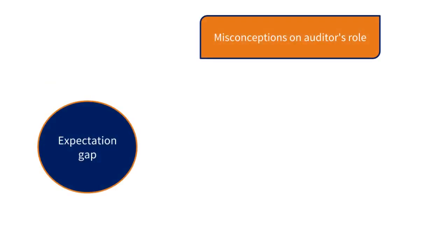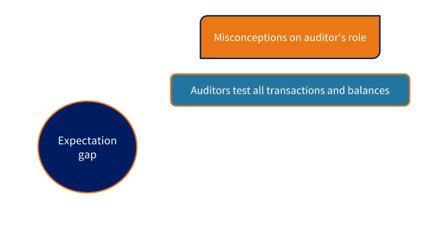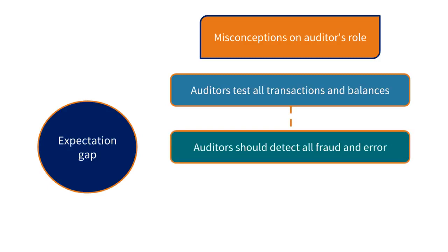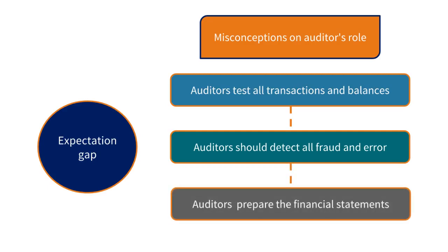There is a misconception of the role of an external auditor. Many users of the financial statements believe the auditors test all transactions and balances — in fact, they test on a sample basis. They believe auditors should detect all fraud and error, when in fact the auditor's responsibility is to report on whether the financial statements are free from material misstatements, whether caused by fraud or error. Many also believe it is the auditor's responsibility to prepare the financial statements, but this responsibility always lies with the directors. This is known as the expectation gap, and auditors wish to reduce this gap to ensure everyone understands their role.